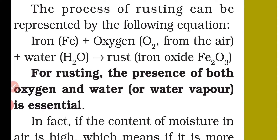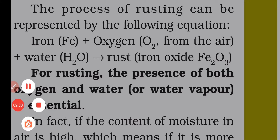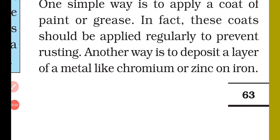If we want to protect iron articles from rusting, we have two options: cut off the supply of oxygen, which is quite difficult, or cut off the contact of water with the iron article. For this we apply paint or grease on the iron articles. It must be applied regularly — not just once, but continuously and regularly to prevent rusting.